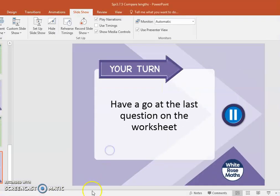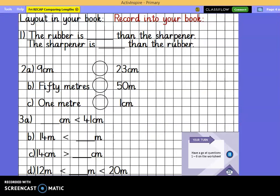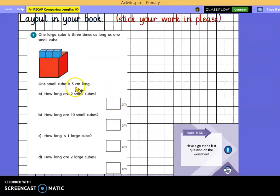I'd like you now to have a go at the last question on the worksheet. And I'd like you please to lay it out in your book like this. Remembering to read carefully. One large cube is 3 times as long as one small cube. One small cube is 5 centimetres long. So this one is 5, this one is 5, and this one is 5. Think, how long would 2 small cubes be? How long would 10 small cubes be? How long would 1 large cube be if it's 3 small cubes long? And how long would 2 of these large cubes be? Stick in your work and record your answers and do any calculating in the squares at the side.